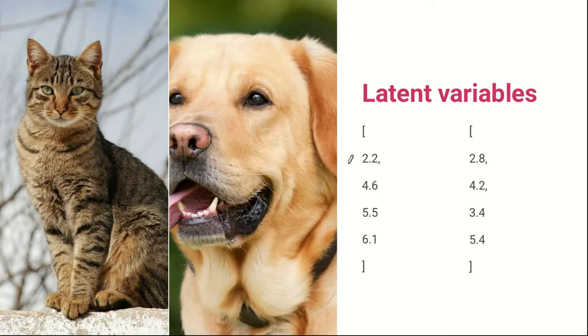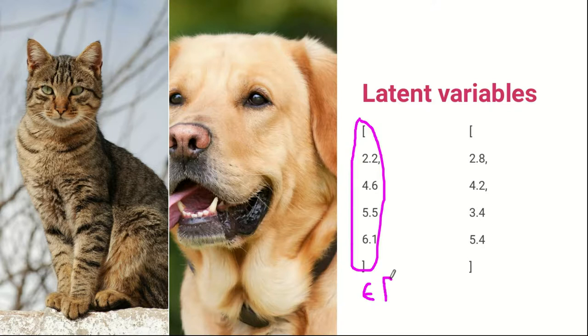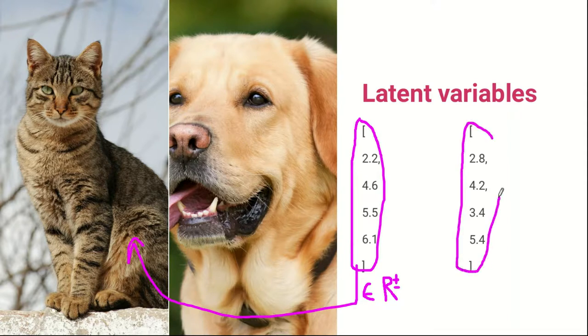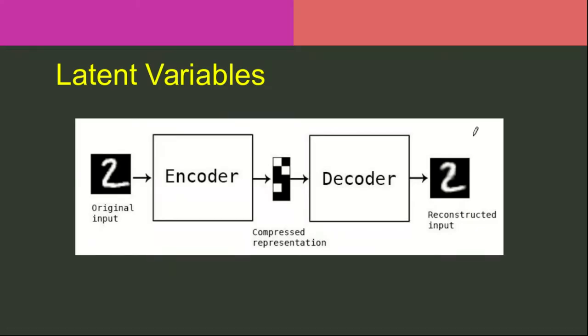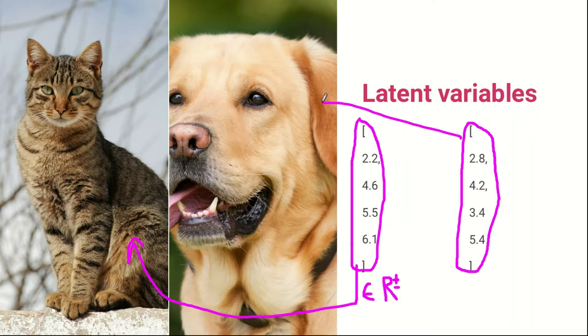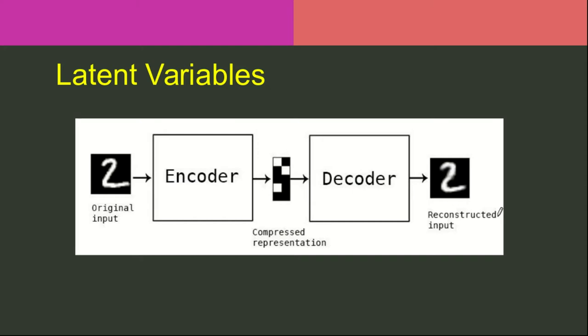To fix this issue, let's use a vector which contains real numbers as its elements instead of using a one-hot encoded vector. We can think of this as code for an image, hence the names encoder and decoder. For example, [2.2, 4.6, 5.5, 6.1] can represent a cat, whereas the vector [2.8, 4.2, 3.4, 5.4] could represent a dog. These initial vectors are known as latent variables.